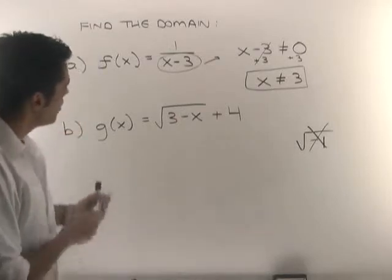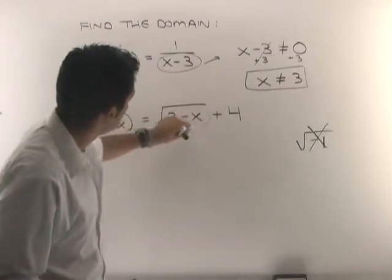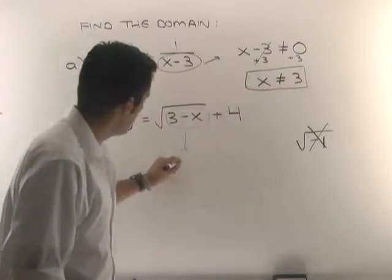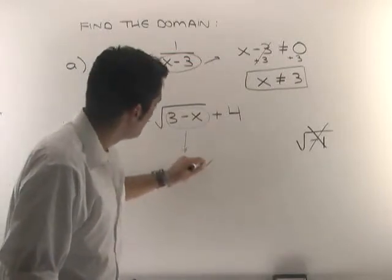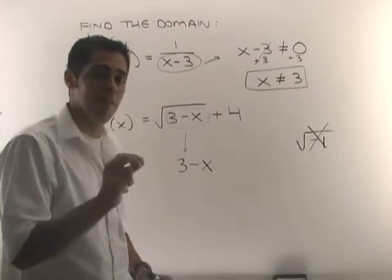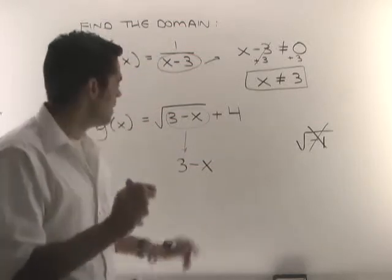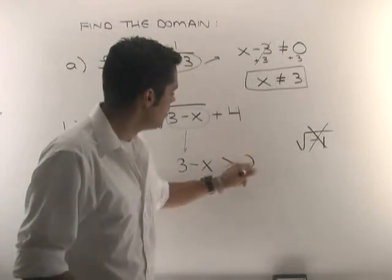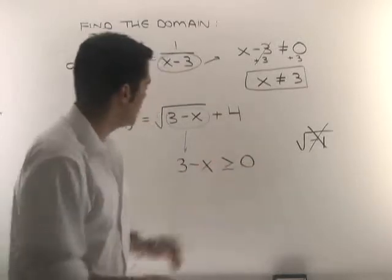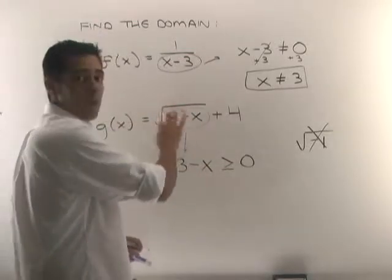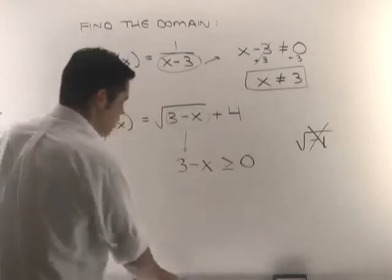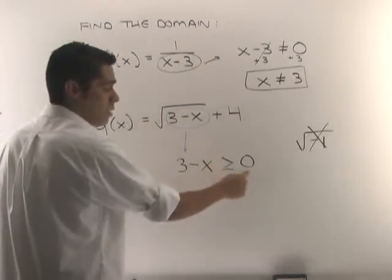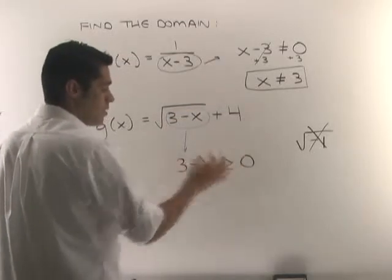So again, what we're going to do is we're going to look under this root and say to ourselves, look, whatever's underneath here, this 3 minus x, we know that this cannot be negative. Now, to not be negative means that you want to be positive. That means it must be greater than 0. Also, it could be equal to 0 because if we had 0 here, the square root of 0 is 0. So what we're saying is this under here must be positive or 0. If it's positive or 0, we're okay.